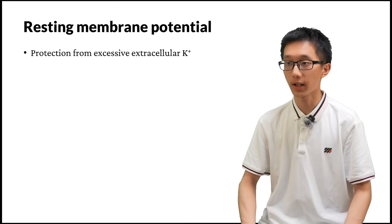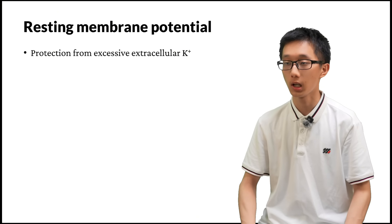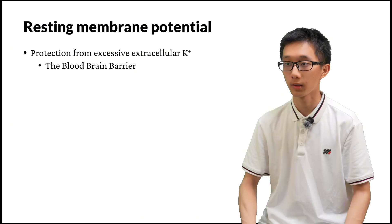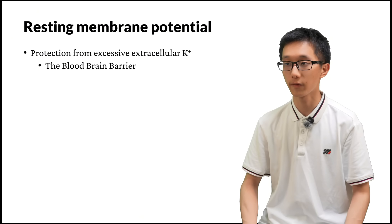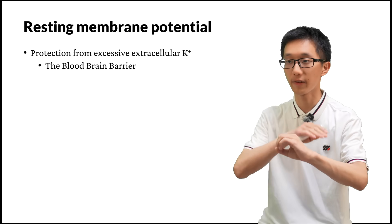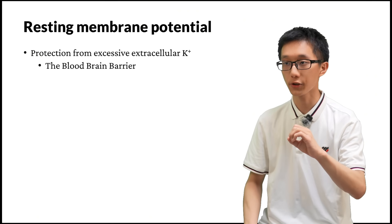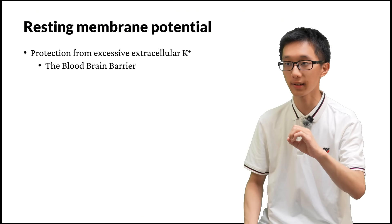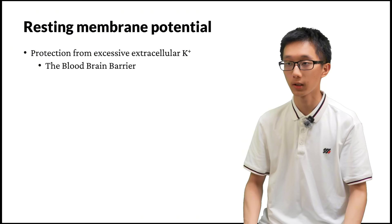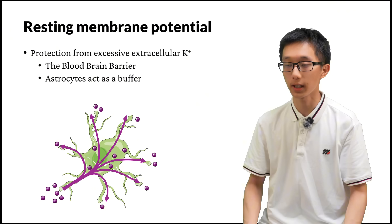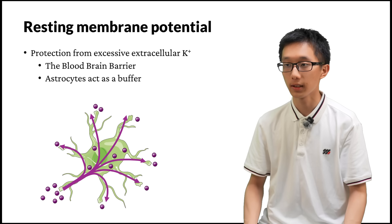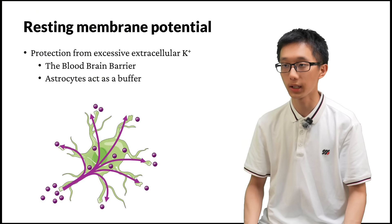Since the resting membrane potential is very susceptible to changes in extracellular potassium, we need to protect neurons from excessive extracellular potassium. This is accomplished through the blood-brain barrier, formed by astrocytes, which surrounds blood vessels in the brain and prevents harmful substances from entering the brain from the blood. The blood-brain barrier prevents excessive extracellular potassium from the blood from entering the brain. Astrocytes also act individually — they can absorb excess potassium ions from one location, transport it across their cell body, and distribute it to areas of lower potassium concentration, thereby diluting it and protecting cells.